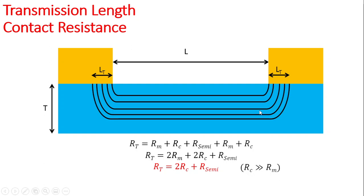Your final equation will be 2Rm + 2Rc + Rsemi. However, you can consider your contact's resistance to be much larger than the resistance offered by the metal, so in this case you can ignore the resistance offered by the metal because it's very small. Your total resistance will be twice the contact resistance and the resistance offered by the semiconductor.